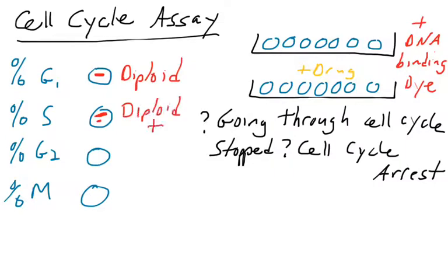If cells are in S phase, they have more than 46 chromosomes. They are in the process of replicating, duplicating their chromosomes. Maybe they're a quarter way through or halfway through. These cells will incorporate more dye and they're going to glow a little more brightly.